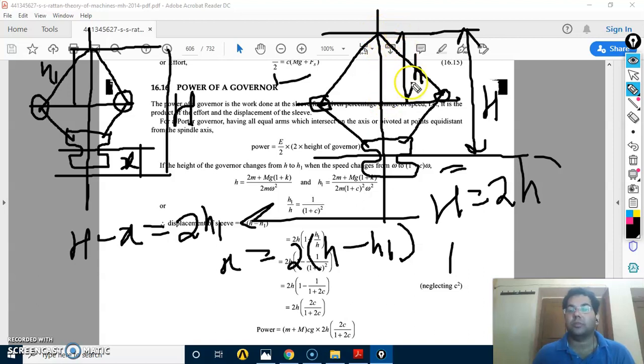This is the height of the governor. What is the relation? The capital H is 2h—two times the total height. This is the same diagram.